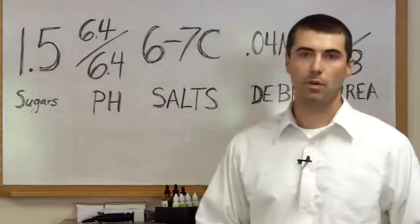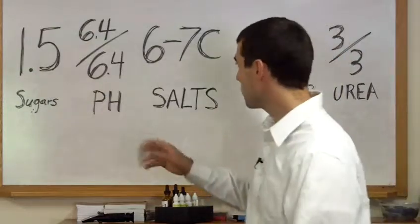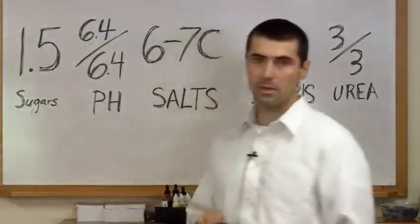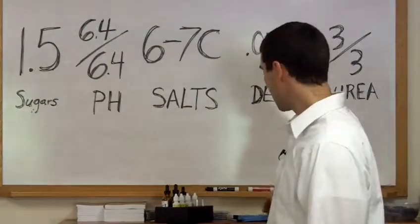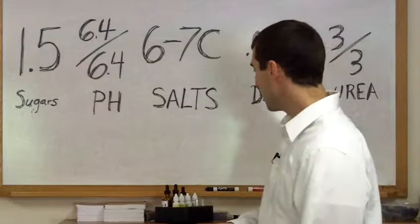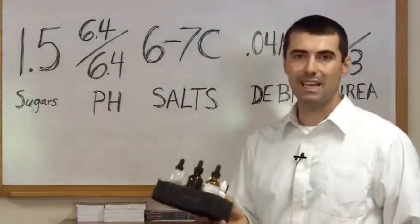There are four pieces of equipment basically necessary to do the test. The first one is a refractometer, second one is a pH meter, third is a conductivity meter, and the fourth is just some basic lab chemicals that you'll get and they come in a kit.